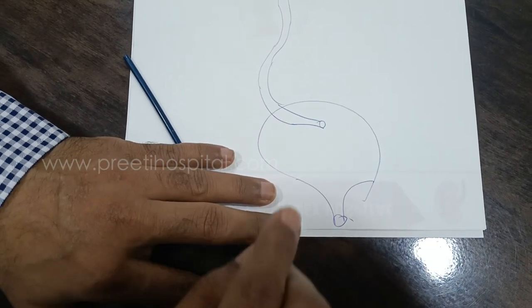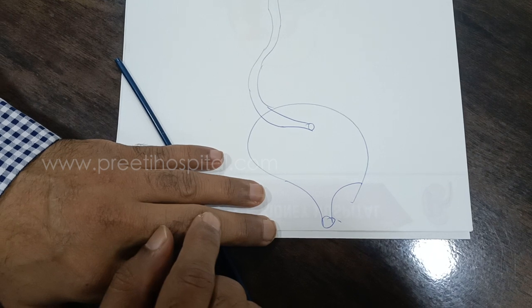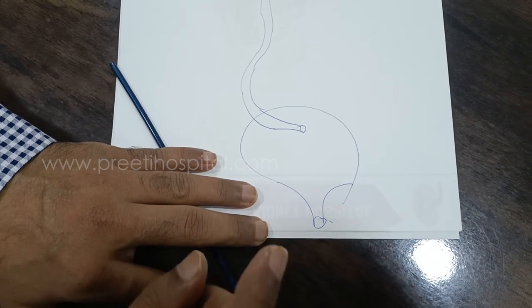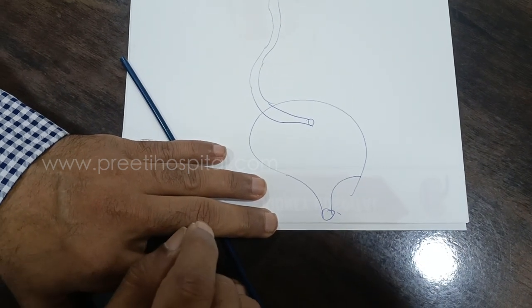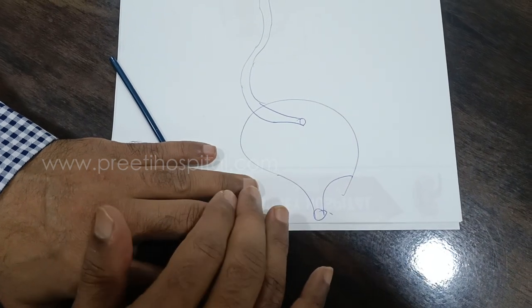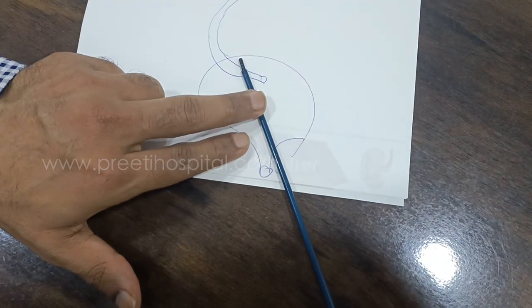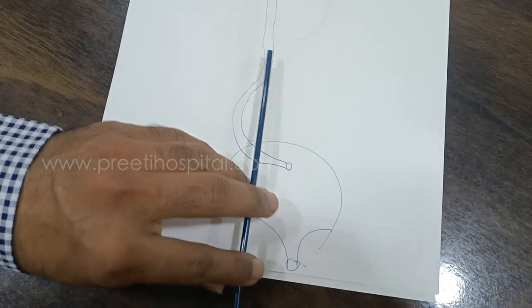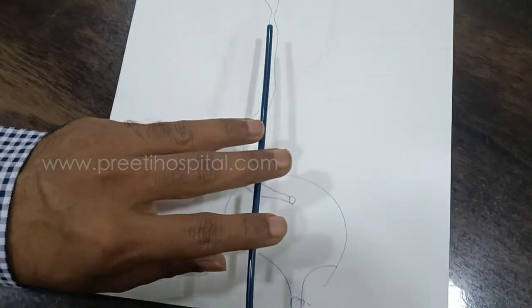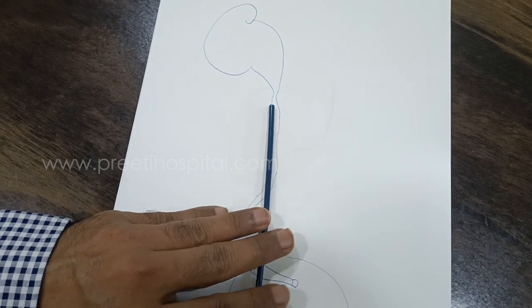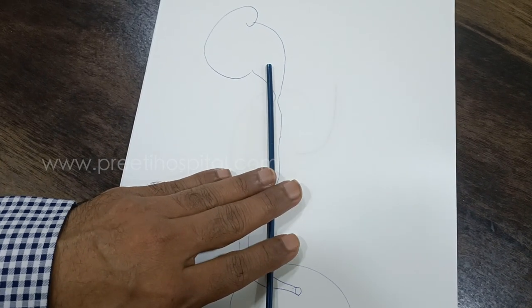Dear urologists, I am sharing a short video which is very important for the juniors. Generally, a lot of people ask me where to keep the access sheet - whether to keep at the lower end, at the middle, at the upper end, or at the pelvis.